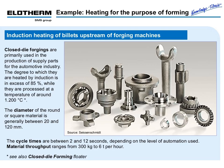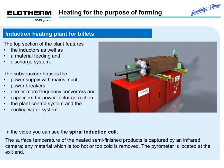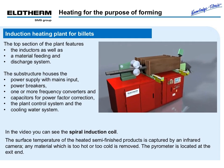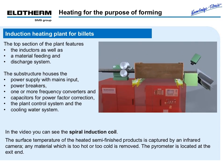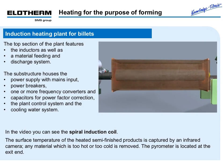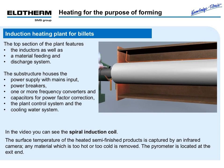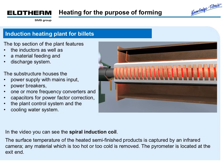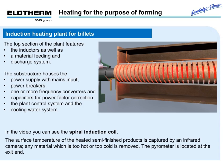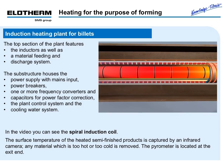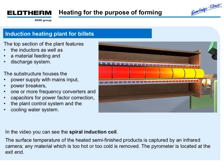Material throughput ranges from 300 kg to 6 tons per hour. The induction heating plant for billets consists of heating conductors as well as material feeding and discharge systems. The substructure houses the power supply with mains input, power breakers, one or more frequency converters, and capacitors for power factor correction, as well as the plant control system and cooling water system. In the video you can see the spiral induction coil. The surface temperature of the heated semi-finished products is captured by an infrared camera, and any material which is too hot or too cold is discharged. The pyrometer is located at the exit of the line.